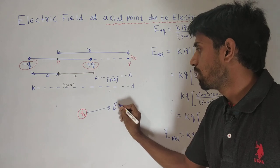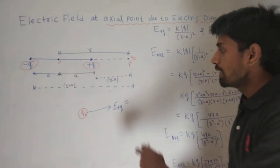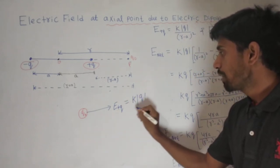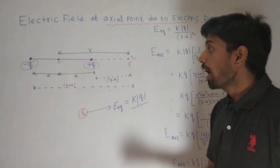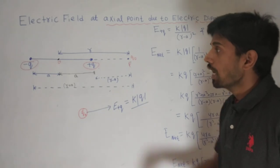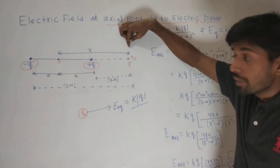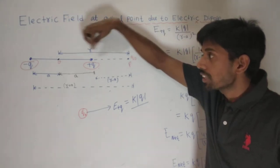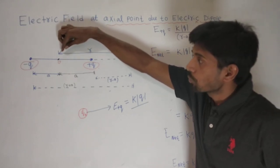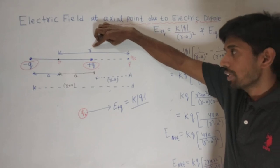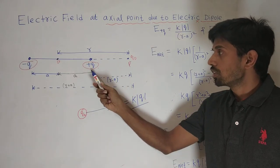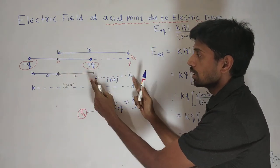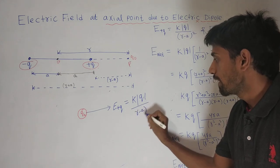The electric field due to plus Q charge has value K times modulus of Q divided by distance squared. R is always taken from the origin O, not from the charge itself. The distance from plus Q to point P is R minus A, so the denominator is (R minus A) whole square. Now for minus Q charge: minus Q will attract Q-naught toward itself, so the electric field due to minus Q is in the opposite direction, toward minus Q.